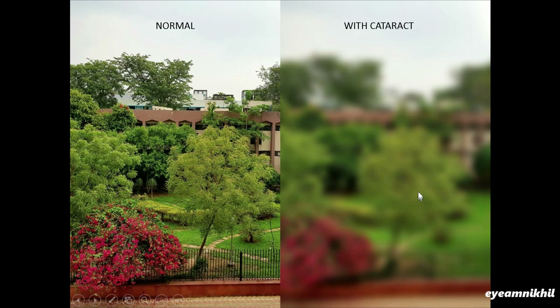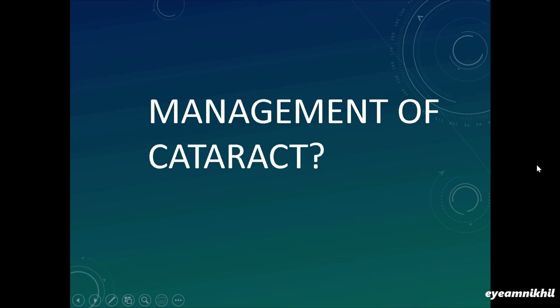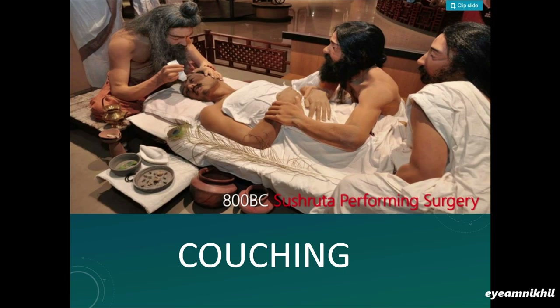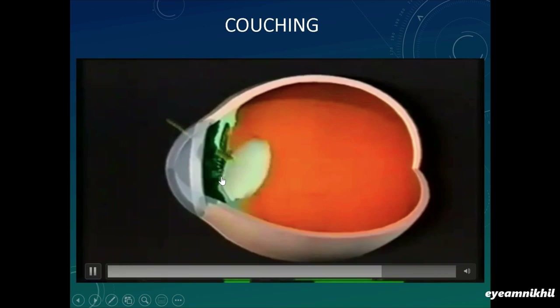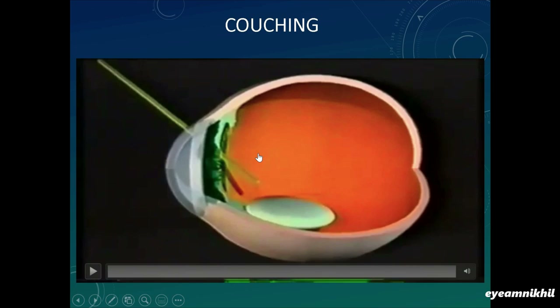As cataracts were causing blindness, we needed to find some solution. The earliest documented cataract surgery was done by an Indian physician 3000 years back. Ancient Indian physician Maharishi Sushruta did cataract surgery by a technique known as couching, which involved using a sharp instrument to push and dislodge the lens into the vitreous cavity. This cleared the visual axis and gave the patient ambulatory vision.